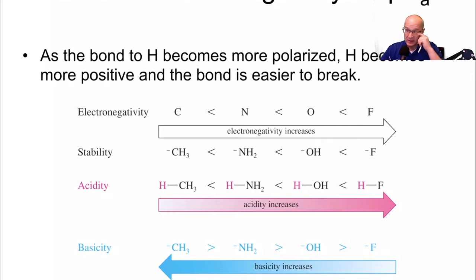As things become more stable, like F minus for example, it becomes less basic. Stable just means it's not as reactive. It doesn't mean it's inert, just more stable, which means it's less reactive.